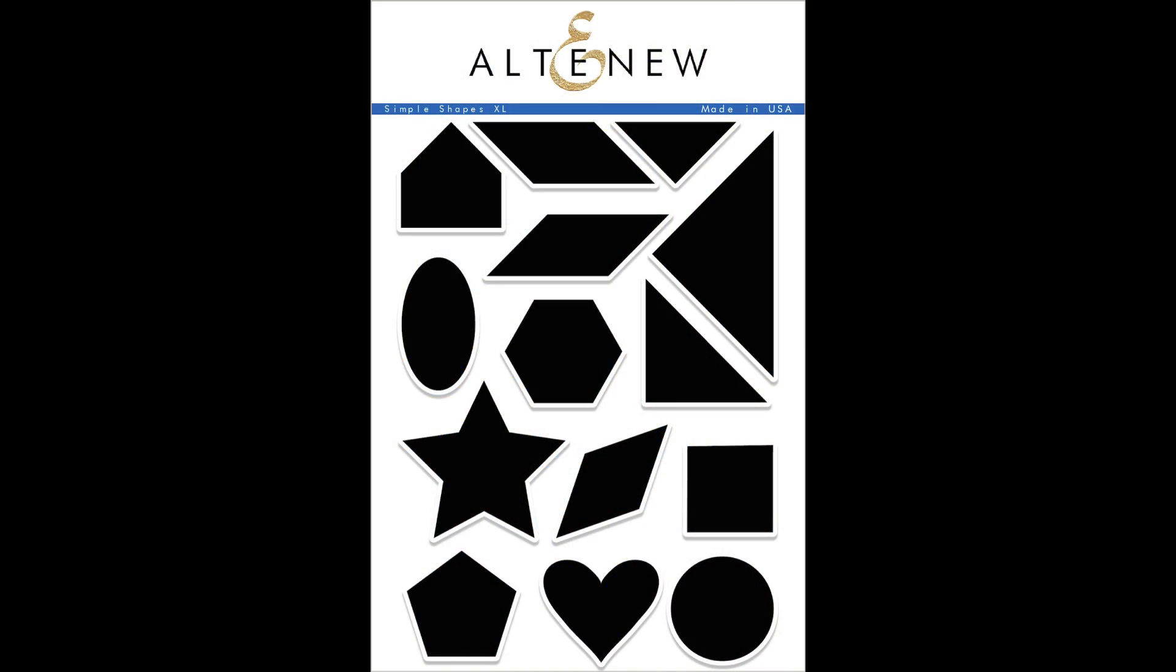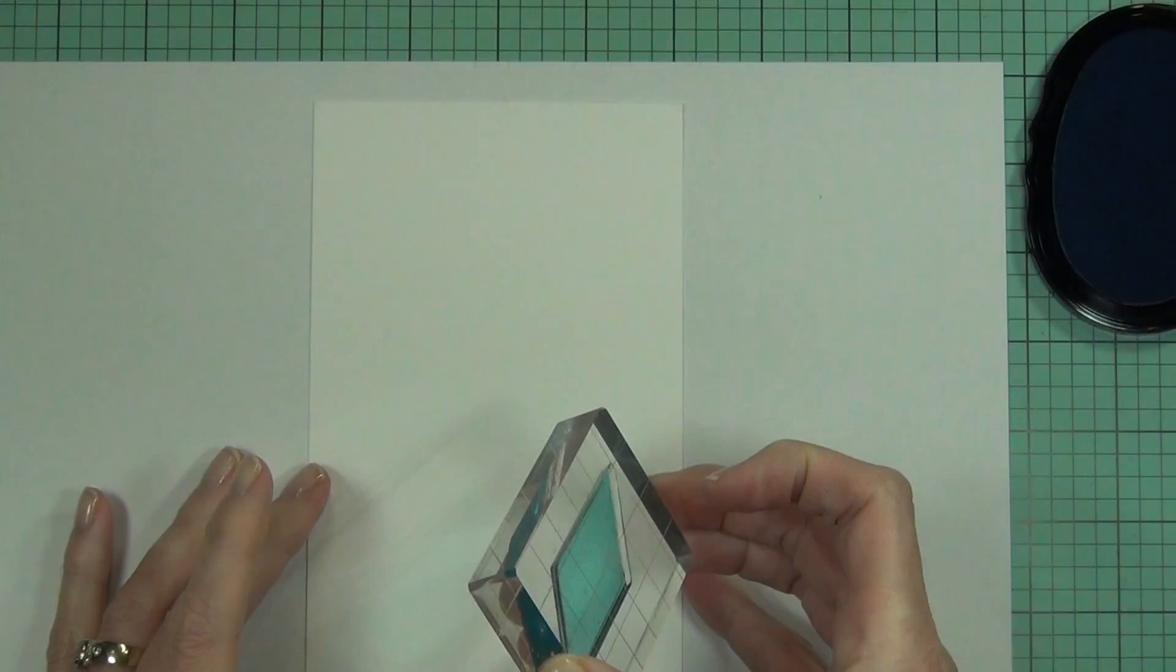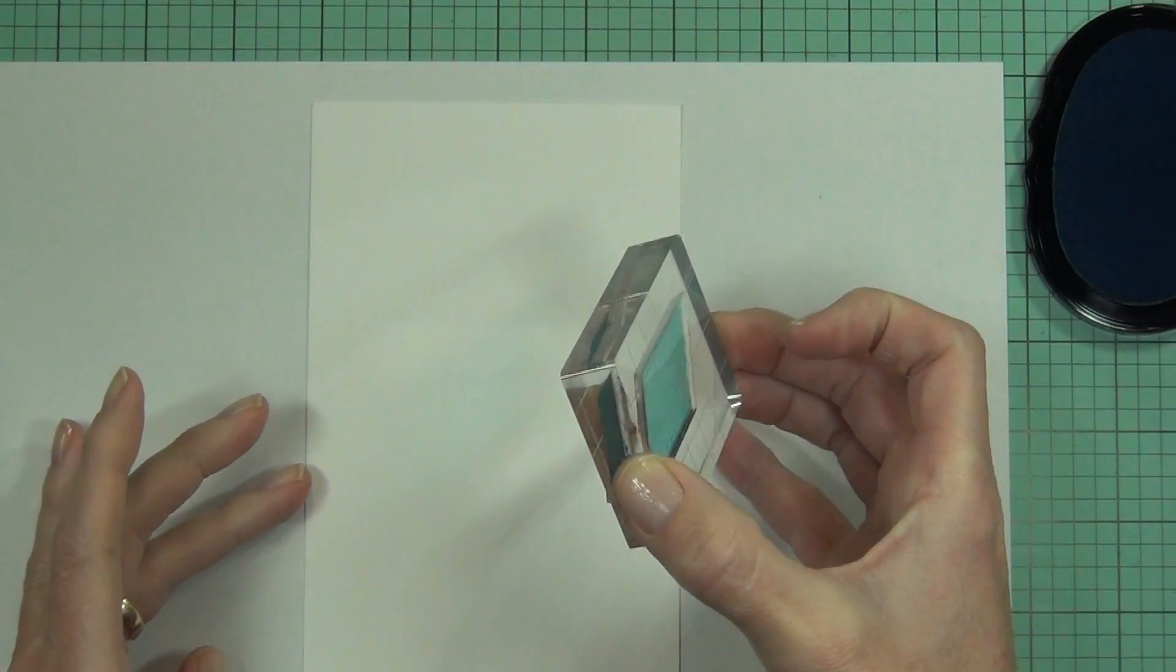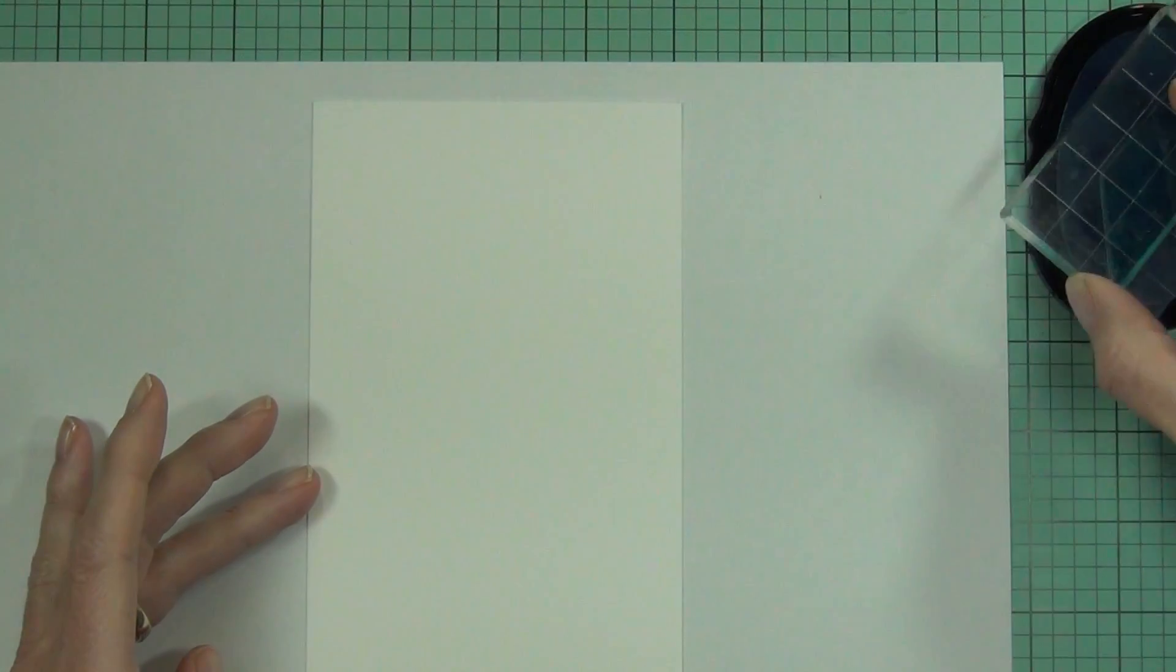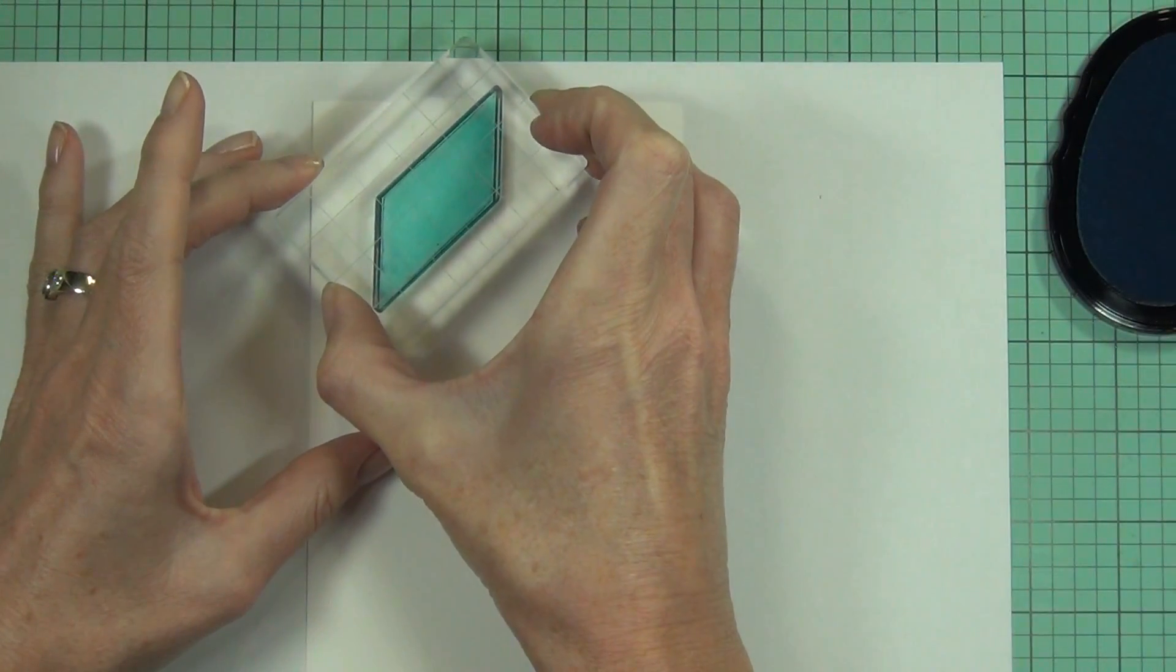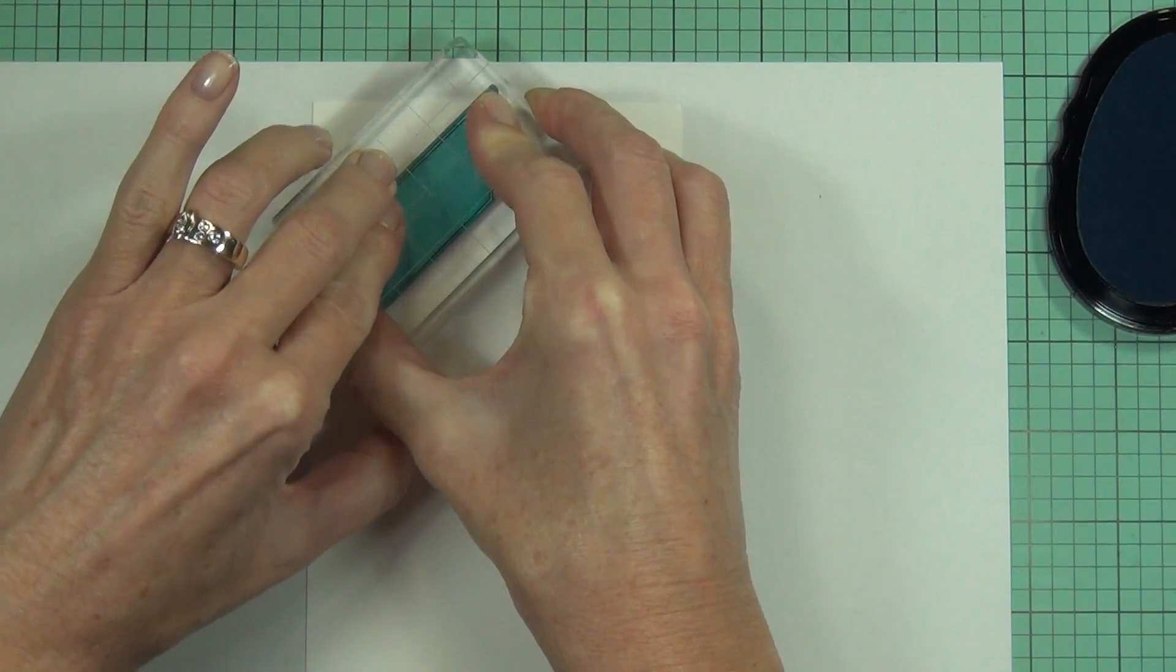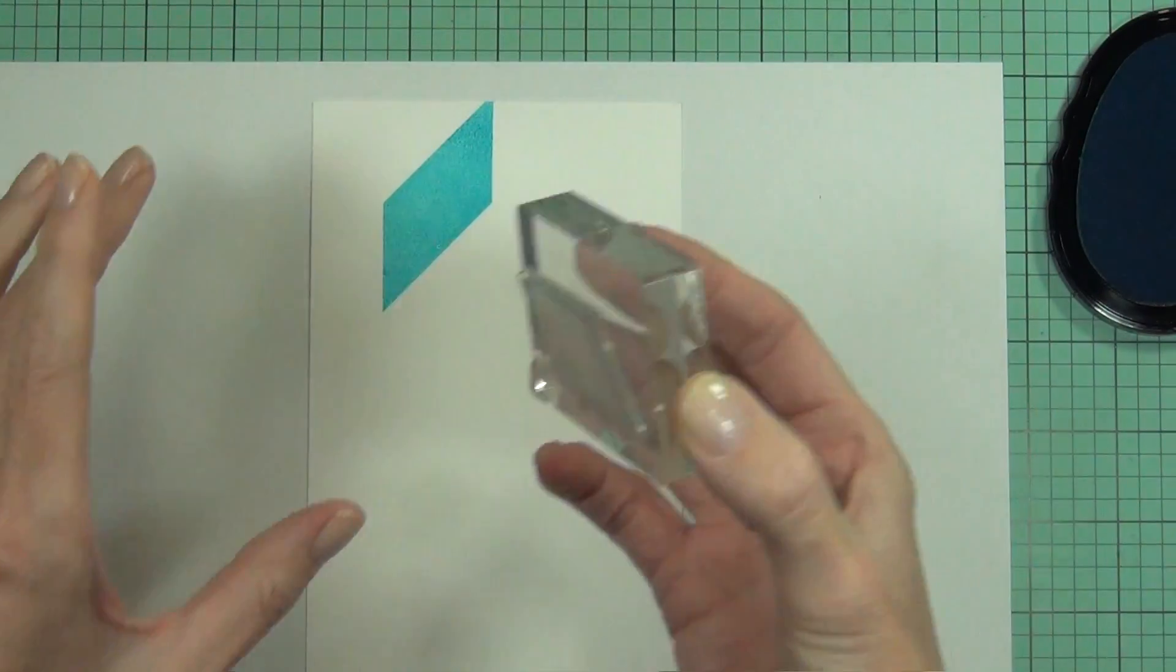Hi, it's Therese from Lost in Paper and I'm here for Altenew today, creating my own custom chevron background. I'm using the Simple Shapes XL set, the six by eight version where all the shapes are much larger so you can have heaps of fun with them.